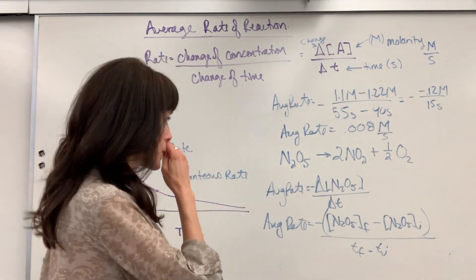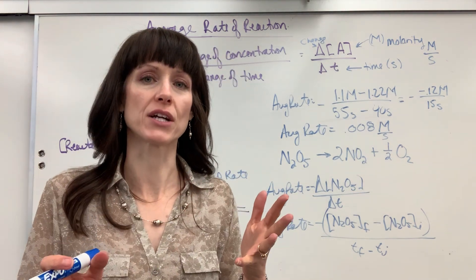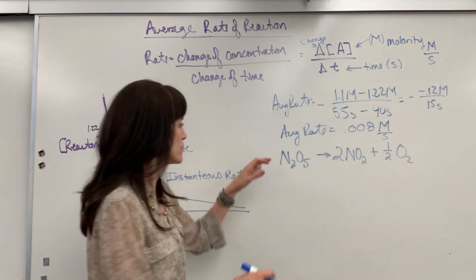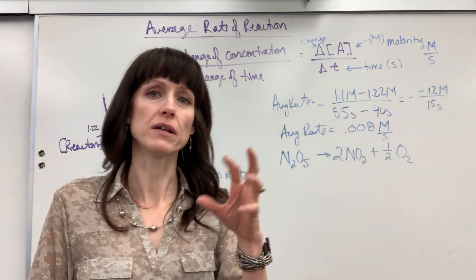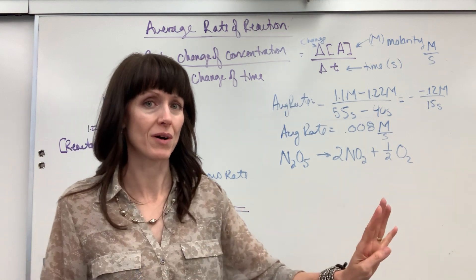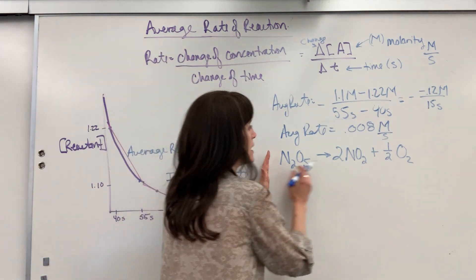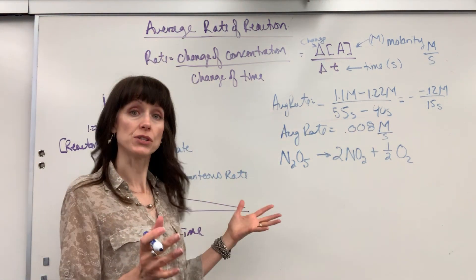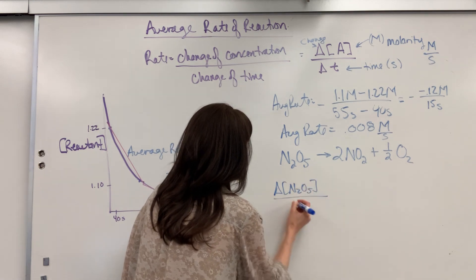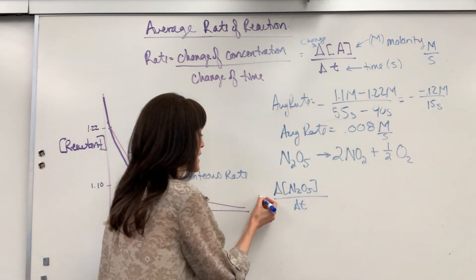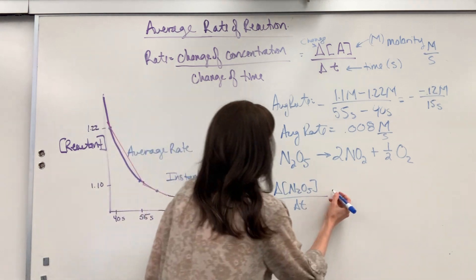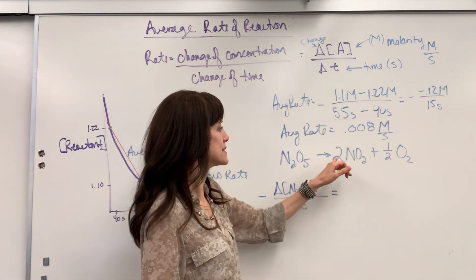Now something really cool: knowing the average rate of one species in a chemical reaction, we can find the rate of everything else. There's a relationship between the rates of every species in a chemical reaction. The rate of change of concentration over time — you simply take the coefficient and reciprocate it, and you can set them all equal to each other. Here's how I can relate these three species: you take the coefficient and reciprocate it. The change of concentration of N2O5 divided by change of time is a reactant being consumed, so it's negative. The coefficient is 1, so it's just 1 over 1.